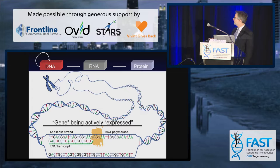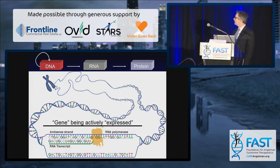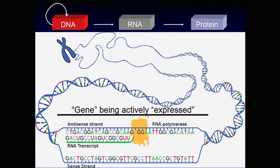RNA is a lot like DNA — it's almost the same thing, just slightly different. The RNA is made to have the same sequence as the DNA, and then that RNA will go out into the other part of the cell, where it will be turned into protein.